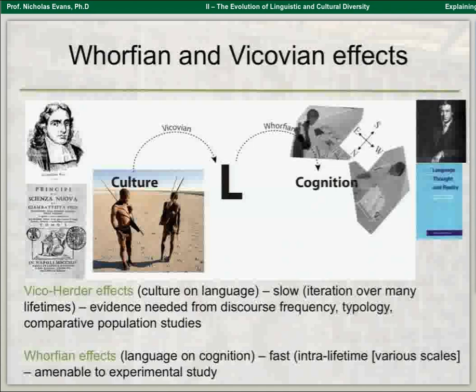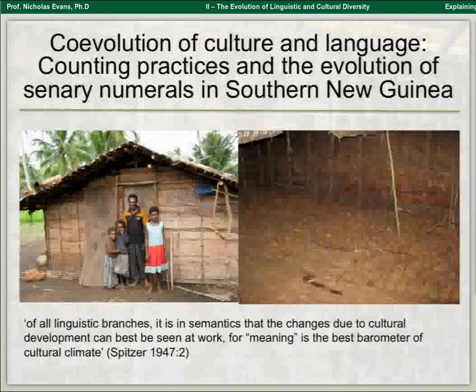So we have Whorfian effects — of culture on language, which are very slow and require iteration over many lifetimes, making it quite hard to get good falsifiable evidence. You need to look at discourse frequency, typology, and comparative population studies. And then Whorfian effects of language on cognition, which operate within a lifetime, possibly much faster, and can be studied experimentally.